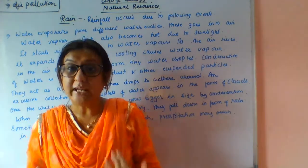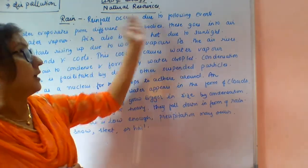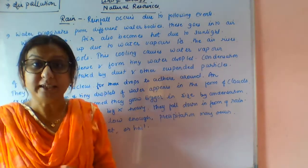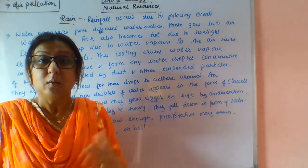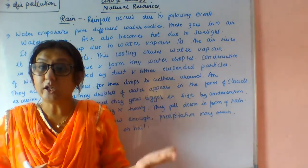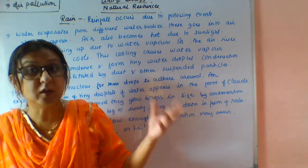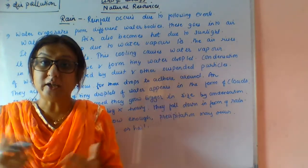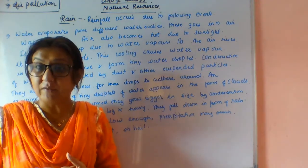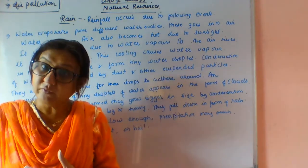So how does rainfall occur? Rainfall occurs by the following events. From so many water bodies like lakes, ponds, rivers, and oceans, the water gets evaporated and changes into water vapor.